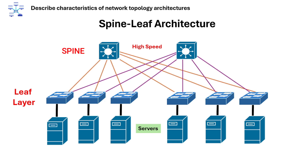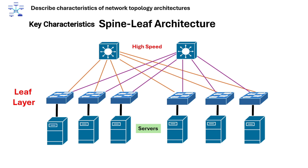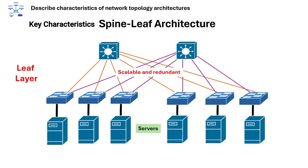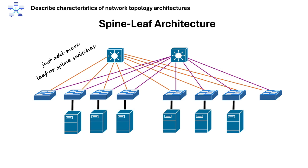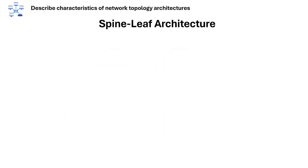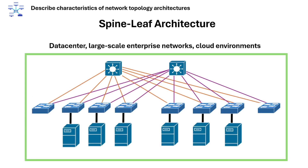The spine switches connect to all the leaf switches, and the leaf switches connect to endpoints like servers. All leaves connect to all spines, forming a non-blocking mesh. Key characteristics include being highly scalable and redundant, since every leaf is connected to every spine with no single point of failure. Spine-leaf is also easier to expand — just add more leaf or spine switches. Example use cases include modern data centers, large-scale enterprise networks, and cloud environments.